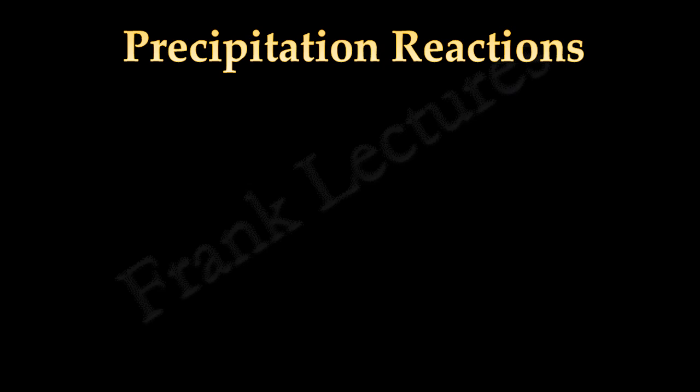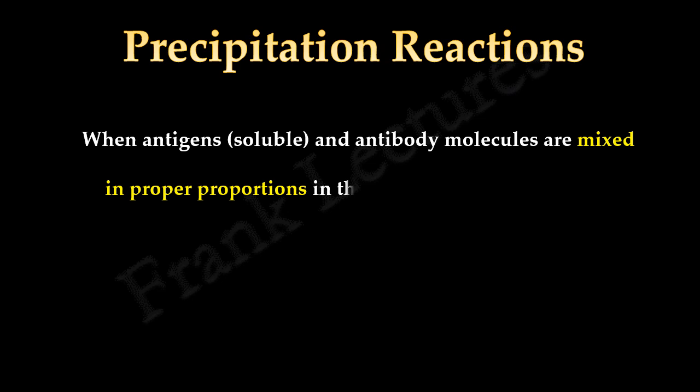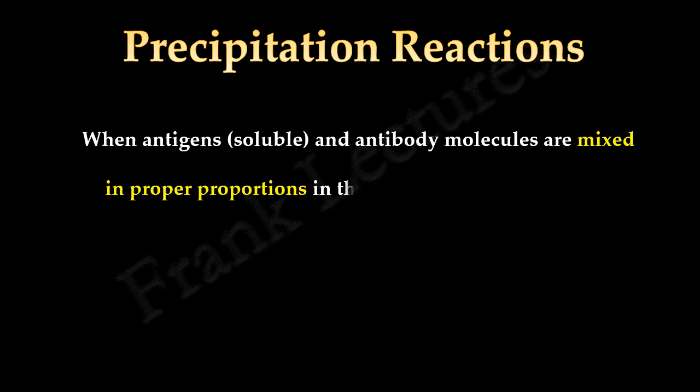So, in this video lecture we understood that in precipitation reactions, when antigens and antibody molecules are mixed in proper proportions in the presence of electrolytes at suitable temperature and pH, they form huge, insoluble, lattice-like complexes called precipitates.